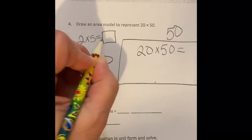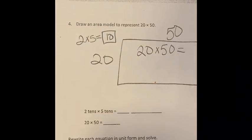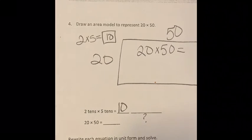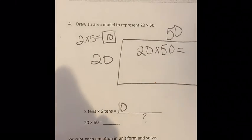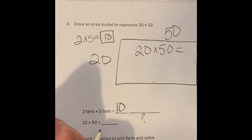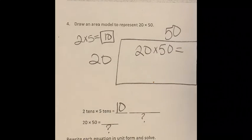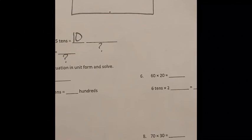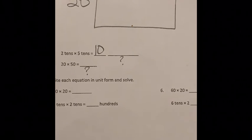2 times 5 happens to be 10. And then I'm going to be like, hmm, well, it's going to be 10 something. 20 times 50 is? Hmm, what will it be? All right, fourth grade. Go ahead and try the rest of the problem set all by yourself.